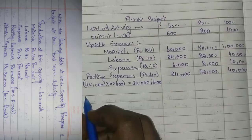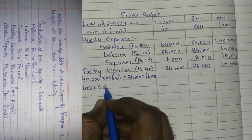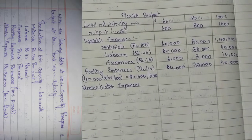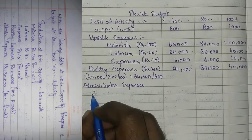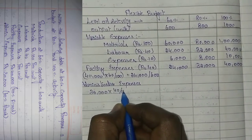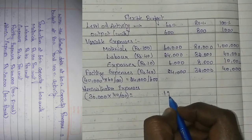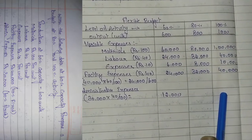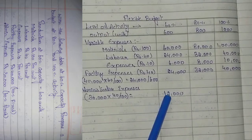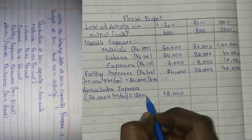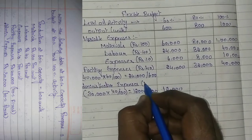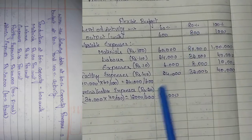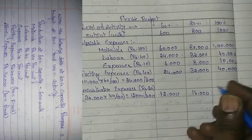Next is administrative expenses. Total is 30,000 rupees, of which 60% is fixed and 40% is variable. So variable portion: 30,000 into 40 divided by 100 equals 12,000. This is the amount for 600 units. Per unit cost: 12,000 divided by 600 equals rupees 20. So for 600 units: 12,000; 800 into 20 equals 16,000; 1000 into 20 equals 20,000.